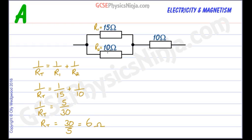And 30 divided by 5 is 6 ohms. And that makes sense. 6 ohms is less than the smallest resistor in the parallel combination.